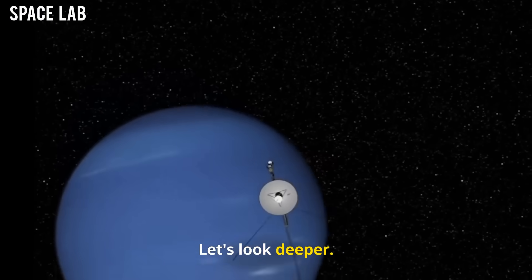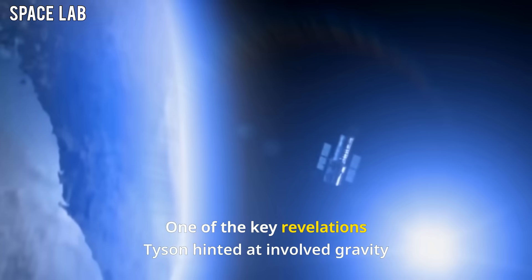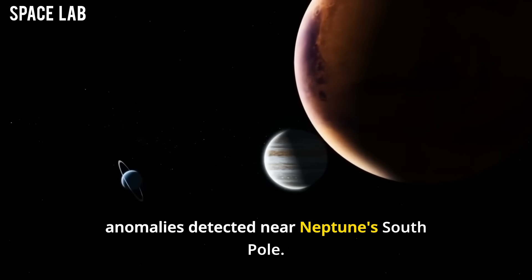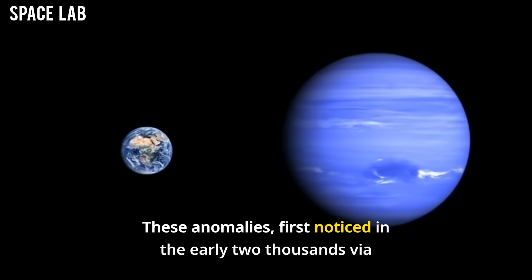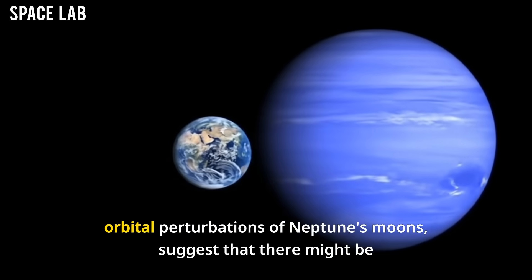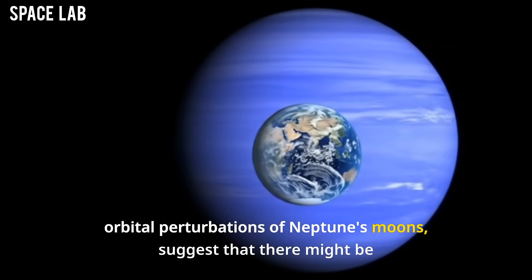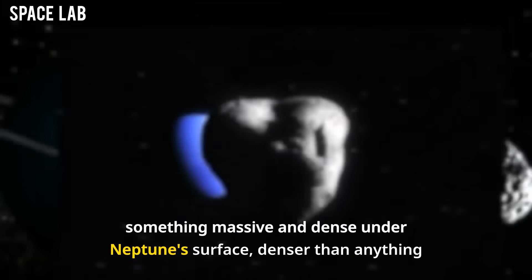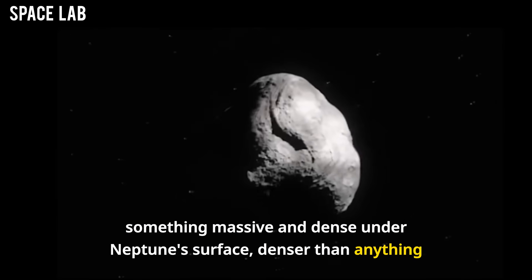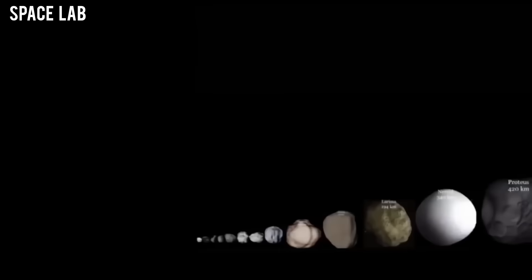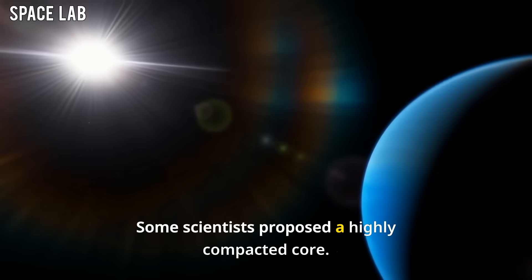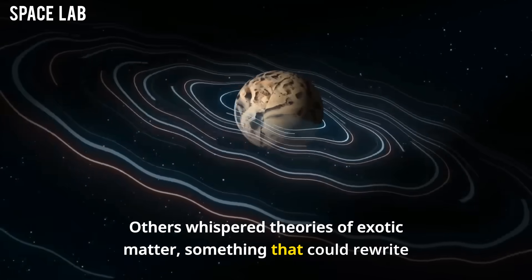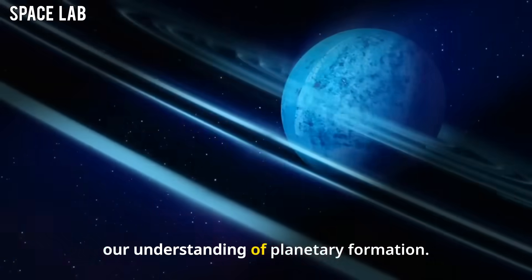Let's look deeper. One of the key revelations Tyson hinted at involved gravity anomalies detected near Neptune's south pole. These anomalies, first noticed in the early 2000s via orbital perturbations of Neptune's moons, suggest that there might be something massive and dense under Neptune's surface, denser than anything we've found in any gas giant so far. Some scientists proposed a highly compacted core. Others whispered theories of exotic matter, something that could rewrite our understanding of planetary formation.